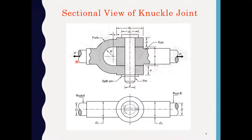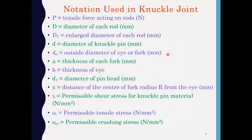Here P is the load to be applied on the joint. Rod A and rod B are connected with the help of the knuckle joint. This is the split pin. These are the various notations used in knuckle joint.